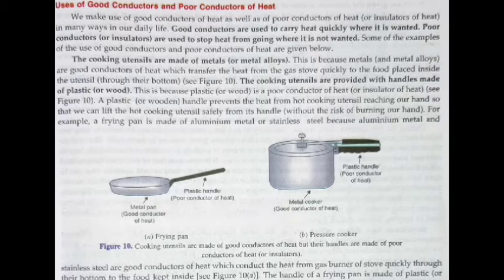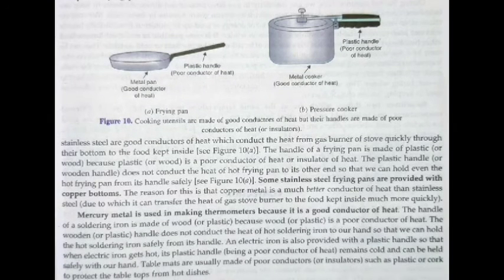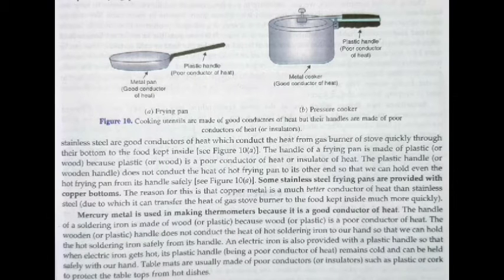Good conductors are used to carry heat quickly where it is wanted. Poor conductors or insulators are used to stop heat from going where it is not wanted. Some stainless steel frying pans are provided with a copper bottom because copper is a good conductor of heat. Mercury metal is used in thermometers because it is a good conductor of heat.